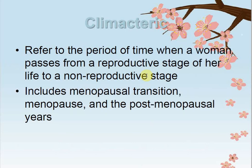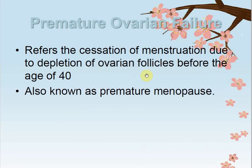The climacteric refers to the period of time when a woman passes from the reproductive stage of her life to a non-reproductive stage — meaning she can no longer give birth due to reduced ovulation function. It includes the menopausal transition, menopause, and the post-menopausal year, encompassing the changes that occur in various body systems.